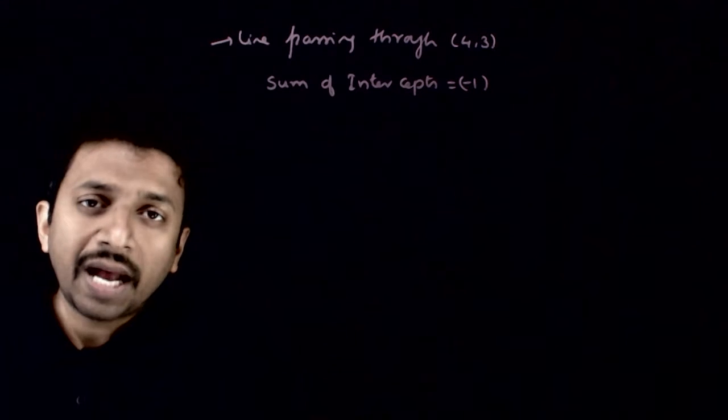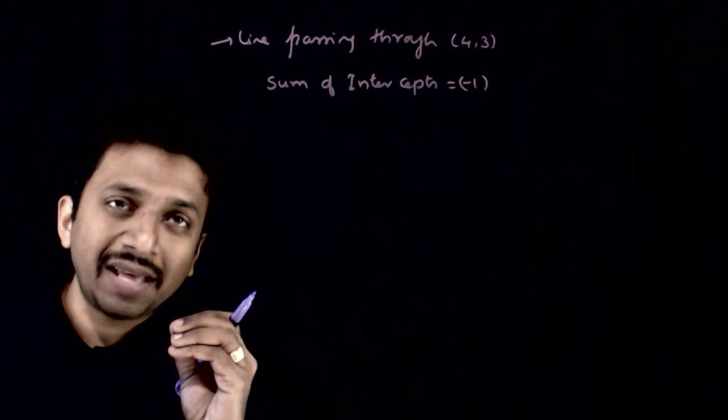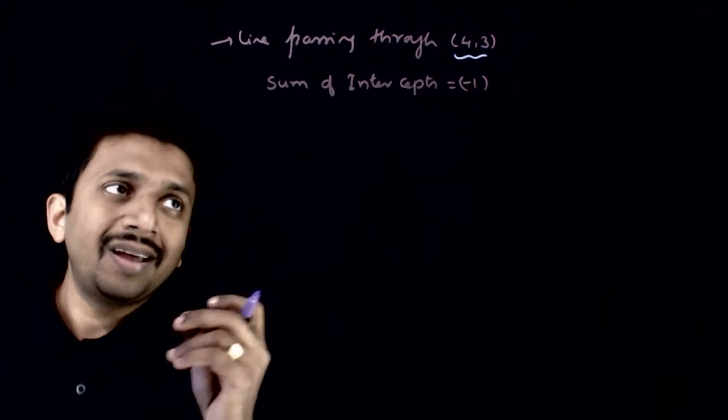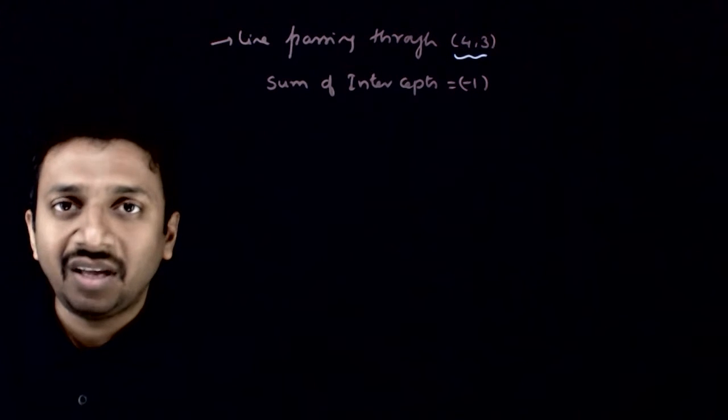Welcome students. In this question, you are asked to find the equations of lines which are passing through the point 4,3 and the sum of intercepts is equal to minus 1.